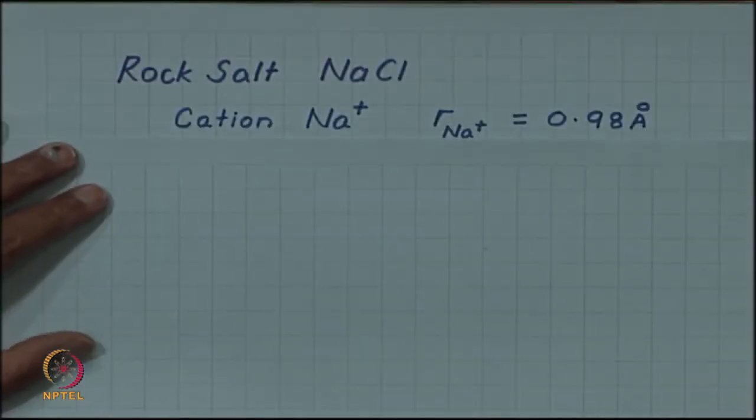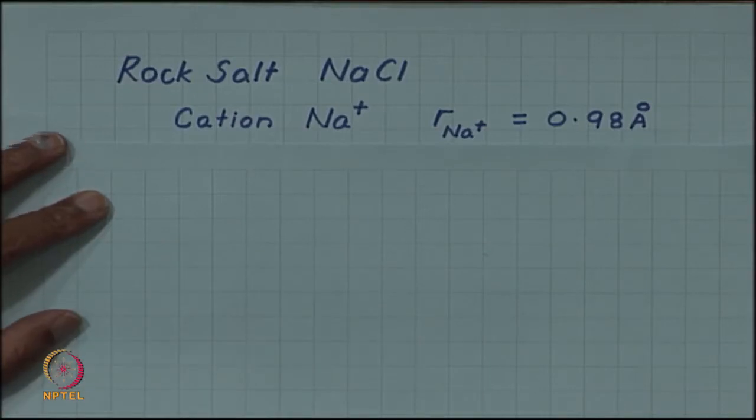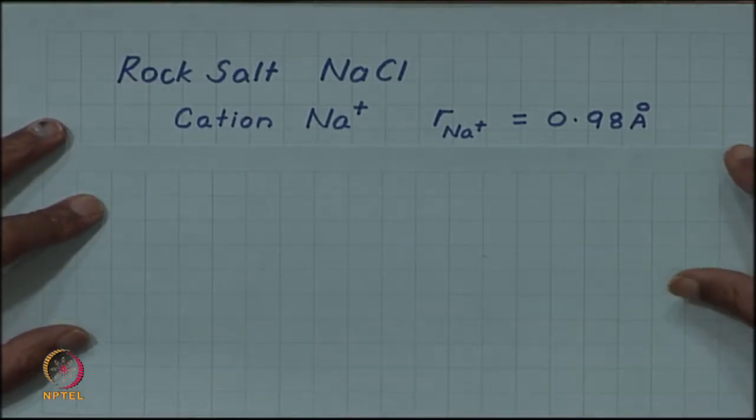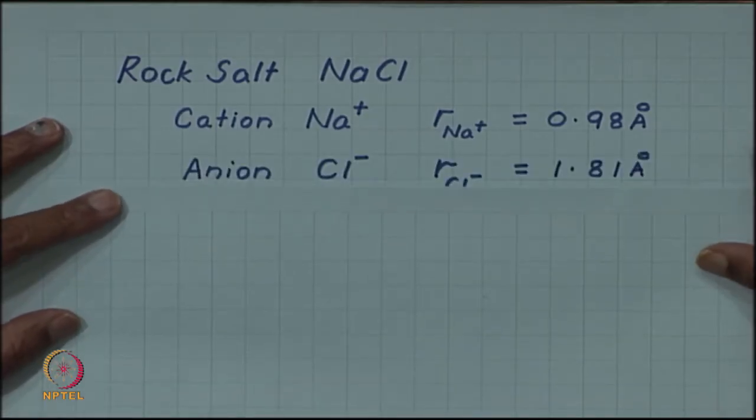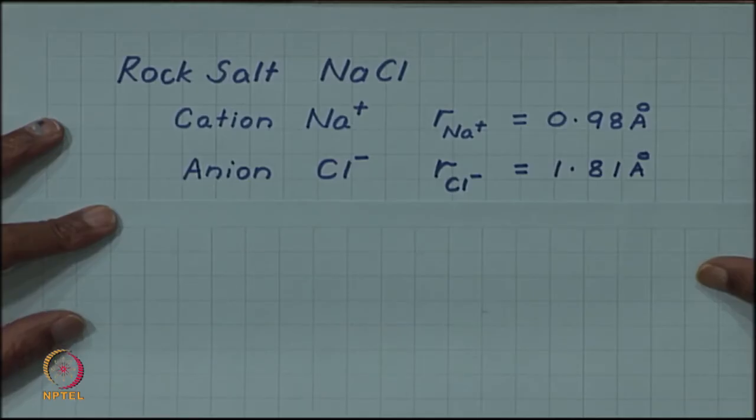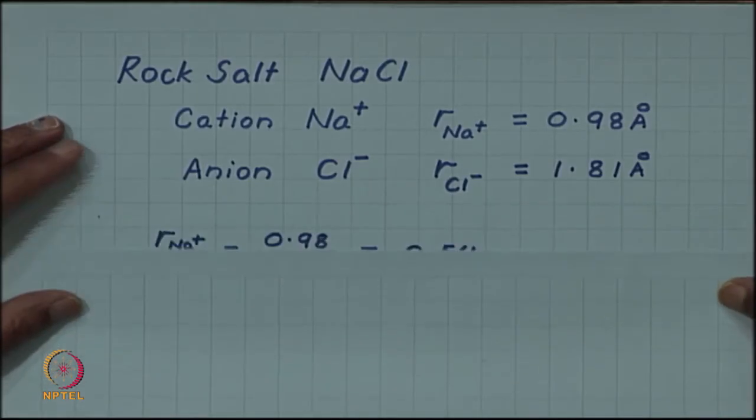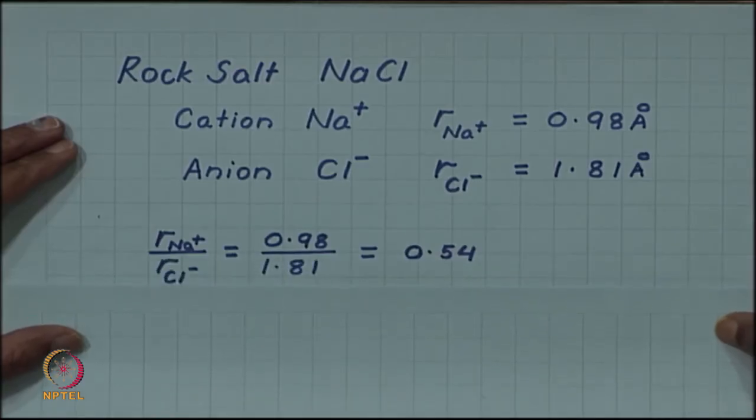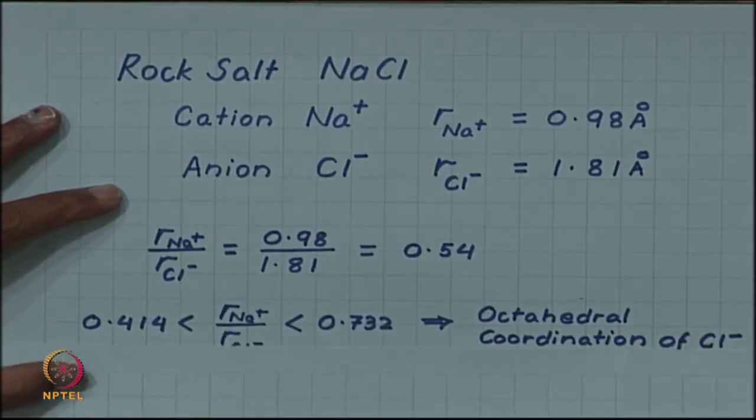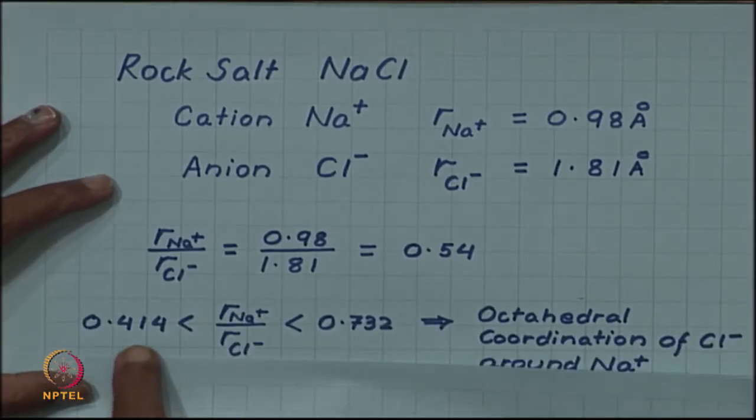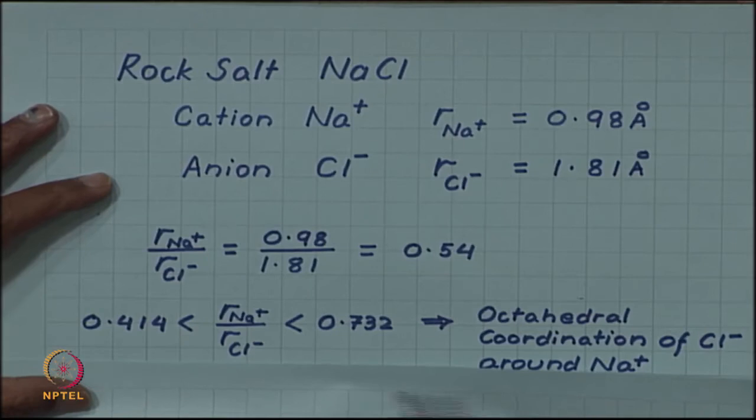In sodium chloride, the cation is Na+ with a radius of 0.98 angstrom. The anion is Cl- with a radius of 1.81 angstrom. If we calculate the radius ratio, we get a value of 0.54. Comparing it with the table given previously, we find that this radius ratio fits between 0.414 and 0.732.